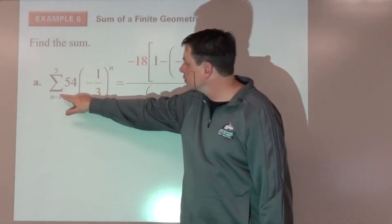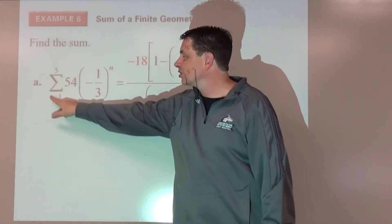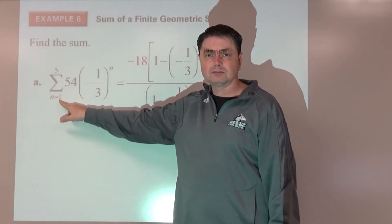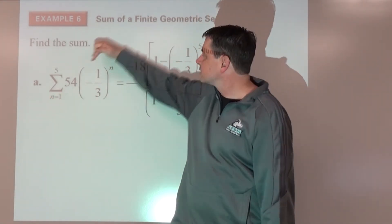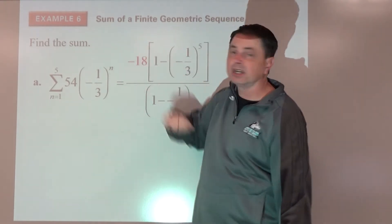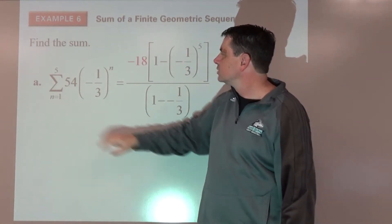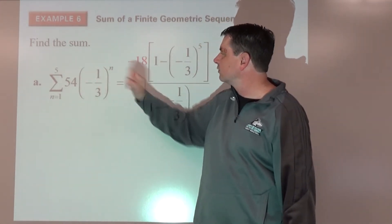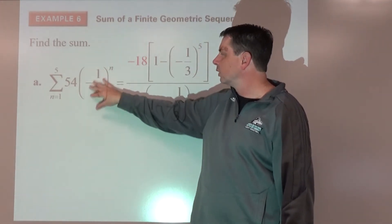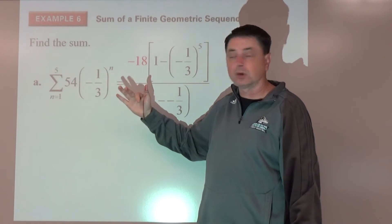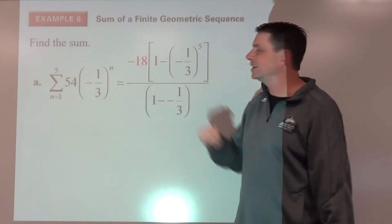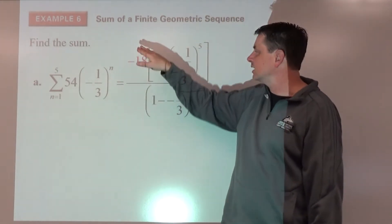To find the first term, substitute n equals 1: 54 times one-third to the first power. One-third to the first is one-third; multiplied by 54 gives negative 18. So a-sub-1 is negative 18.